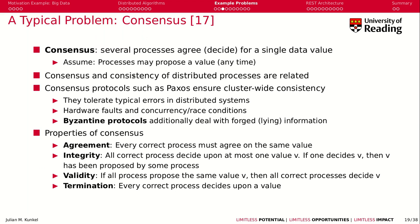This problem is really related to a consistency problem, and there exist protocols such as Paxos that ensure cluster-wide consistency. They are very sophisticated and tolerate typical errors in distributed systems like network outages, CPU mistakes, hardware faults, and race conditions — meaning one process is faster than the other.